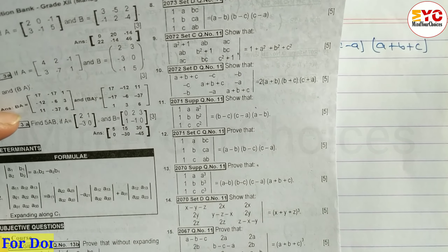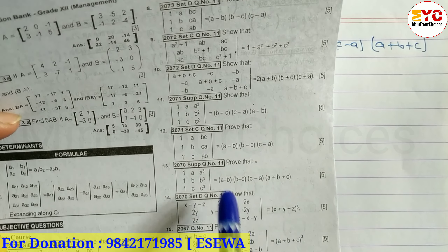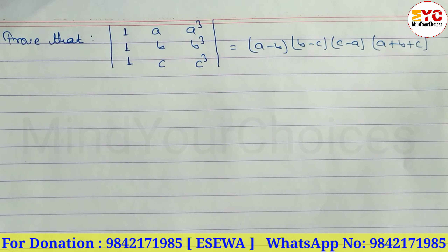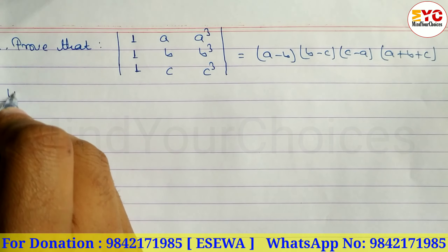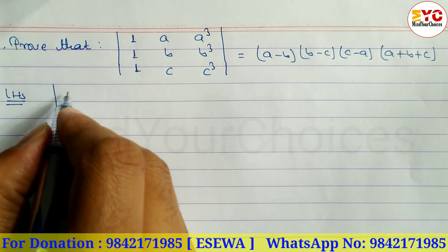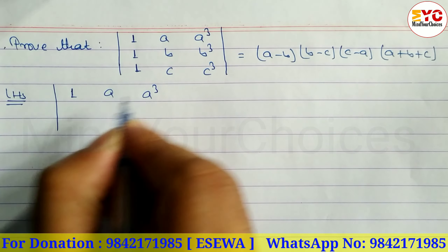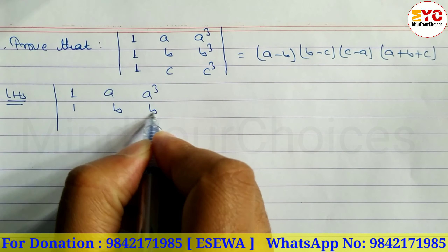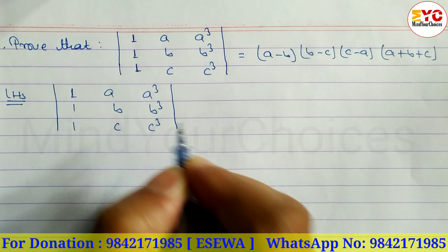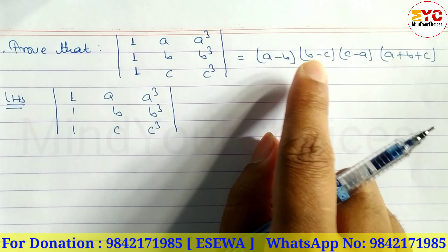Let's take LHS and prove it equals (a-b)(b-c)(c-a)(a+b+c). We take the left-hand side. The determinant has three rows: 1, a, a³ then 1, b, b³ then 1, c, c³. We have to take the LHS.